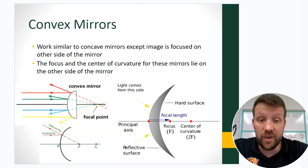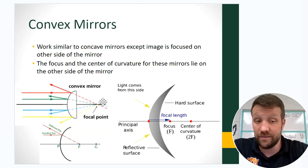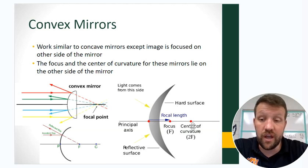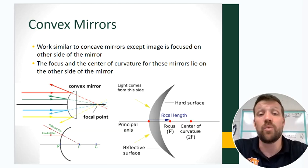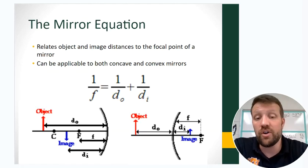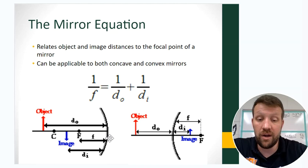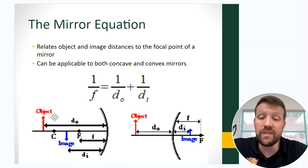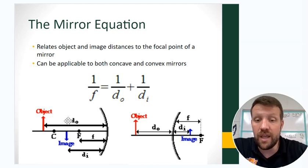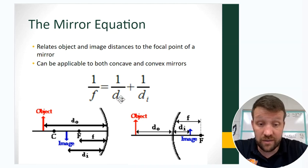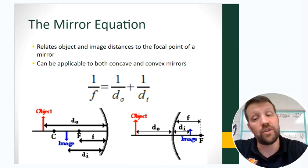Convex mirrors spread light out — the focus and center of curvature lie on the other side of the mirror, making images hard to interpret. The mirror equation relates the object distance and image distance to the focal point F: 1/f = 1/dₒ + 1/dᵢ. If you know the focal point, you can determine either the object distance or image distance from the other. We'll do a little bit with that.